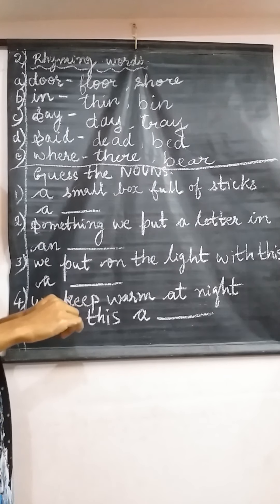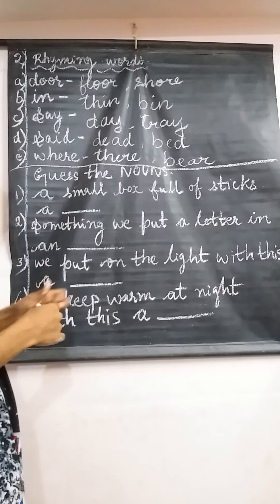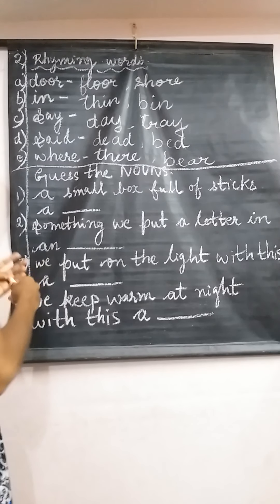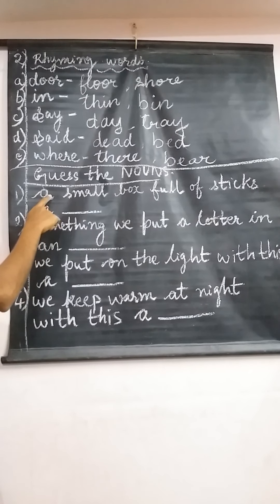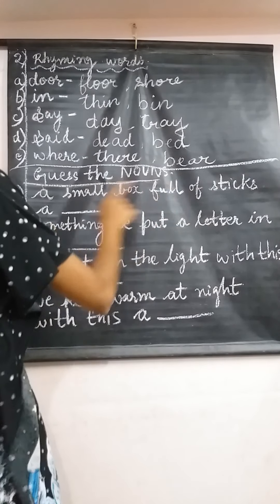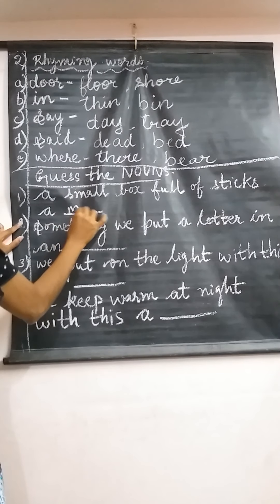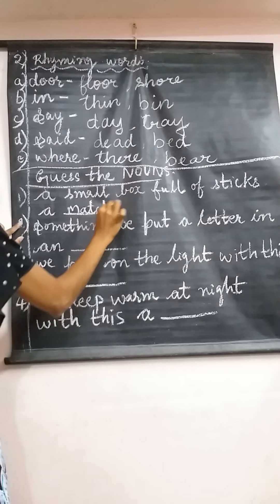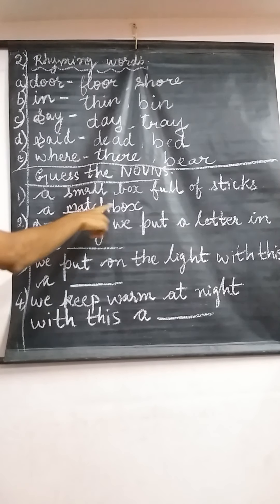Now that you have understood rhyming words, let us go and fill in the lines — guess the nouns. Let me read for you: 'A small box full of sticks — a dash.' What noun can we write there? A small box full of sticks is a matchbox.